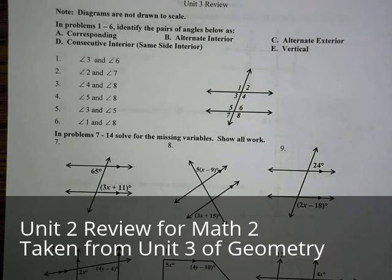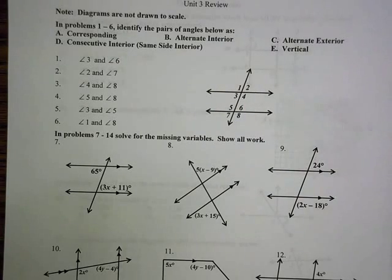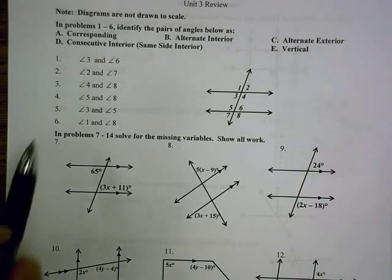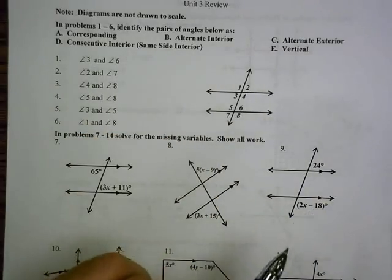We are looking at the Unit 3 review, and this chapter covers parallel lines, parallel lines cut by transversals, and then our four angles once we have those parallel lines cut by transversals. So in the first six problems, we're identifying the pairs of angles that we have, just looking at the location and naming the relative pairs that are given. It even gives you the options of the ones that you have up there.